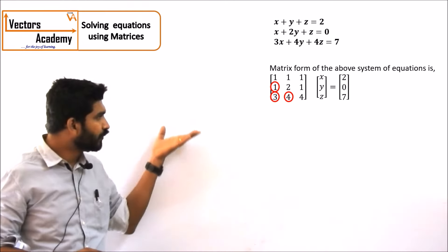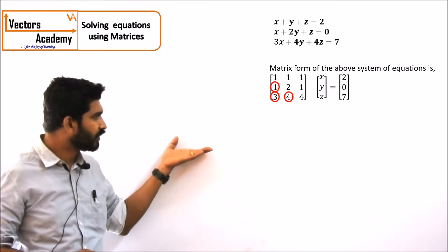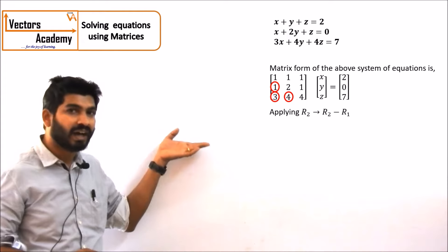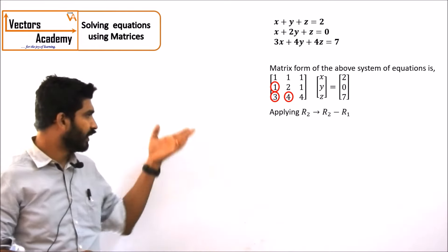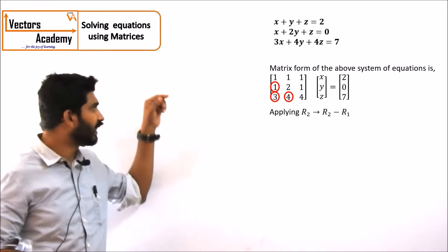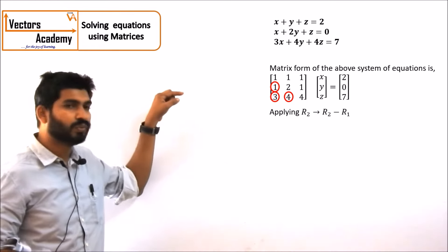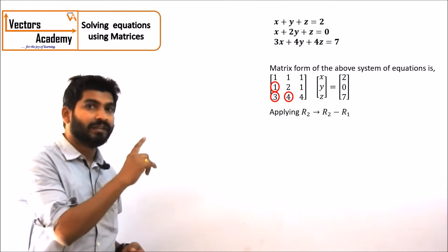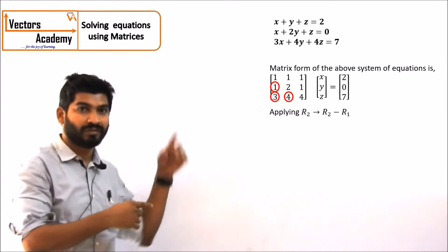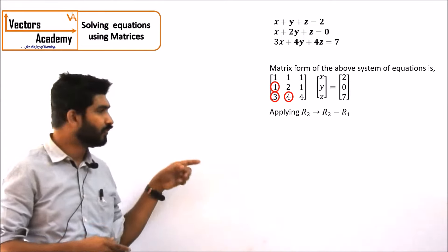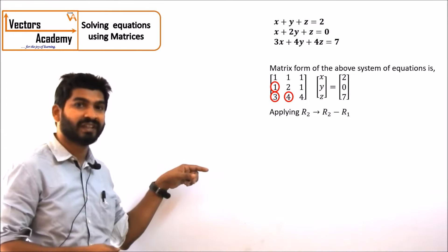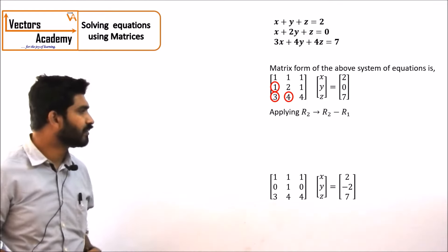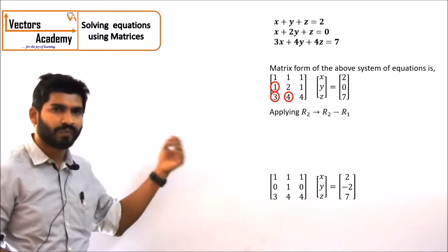The first row transformation is R2 minus R1. We can directly see that the first element of row 2 is 1, and the first element of row 1 is also 1. So if you subtract them, you will get 0 in the second row. This is the first transformation — we already got 0 in that position.